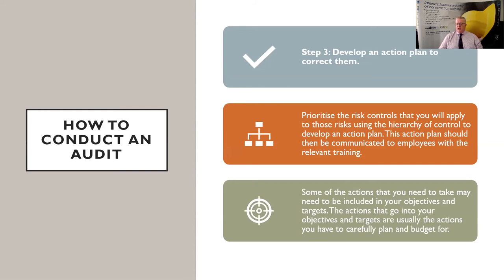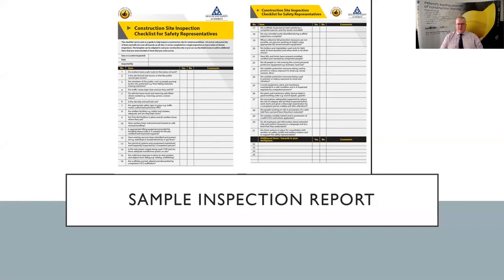The action plan should be communicated to all employees with the relevant training or responsibility on site. Some actions may be included in your objectives and targets; others may need to be dealt with on a longer scale based on financial planning or budgets. Here you can see a sample of the Be Smart construction site inspection checklist for safety reps — a very useful document for anybody starting out for the first time or for safety reps doing initial inspections to get a feel for what they're looking for on site.